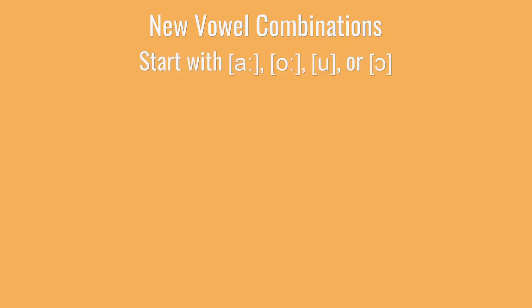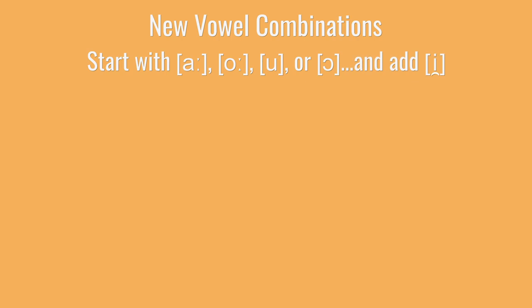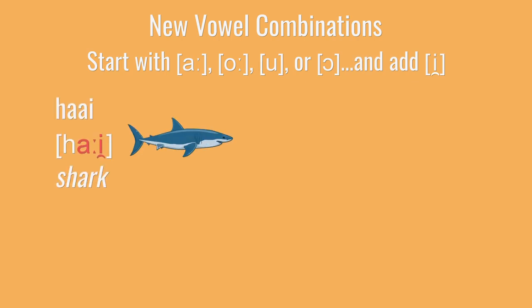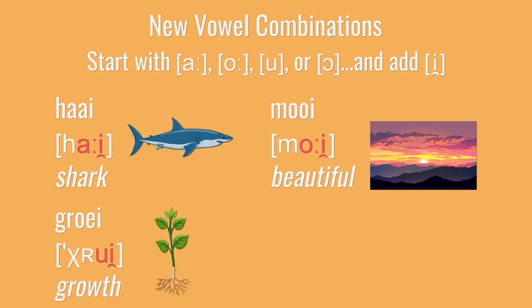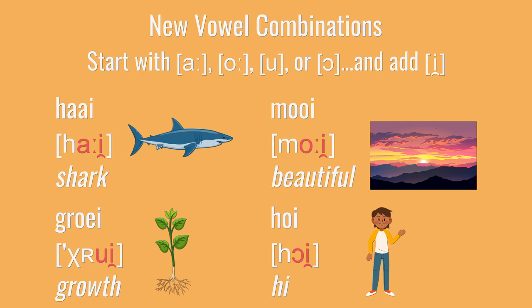Now for some new vowel combinations. Basically take an A, an O, an O, or an O and then stick an E at the end, and you'll get AI as in hoog, OI as in mooi, OI as in groei, and OI as in hooi. For all of these, make sure you go all the way to E at the end and you'll be good to go.